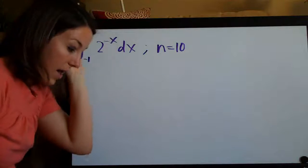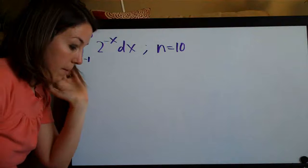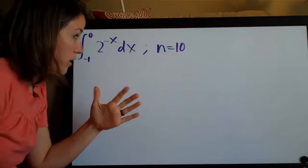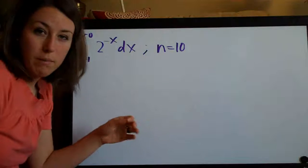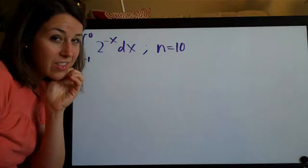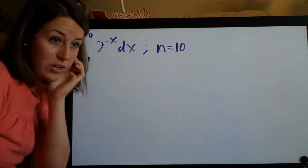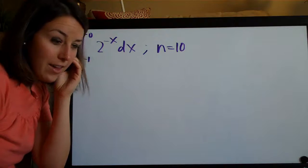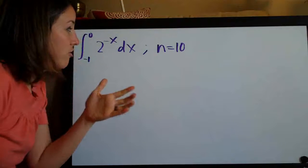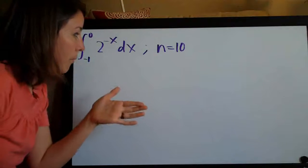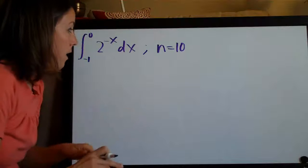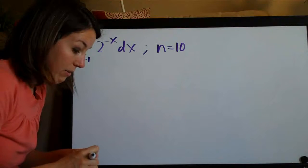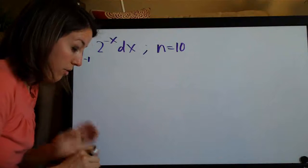I wrote down the trapezoidal rule formula in the first video, but I'm not going to write it down in this problem because I think it causes more confusion than it helps. I would actually just like to go through the problem step by step without even writing down the formula.